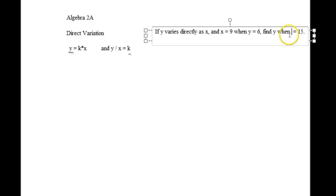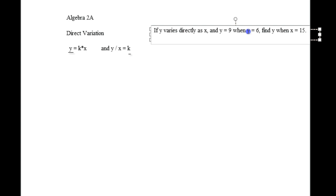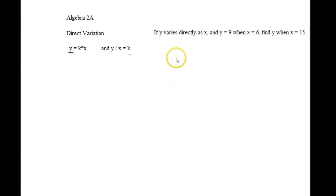Let's just switch them all up. The reason why you want to do this, it just depends on the order of how you write out the equation. All right, so if y varies directly as x, and y equals 9 when x is 6, find y when x is 15.